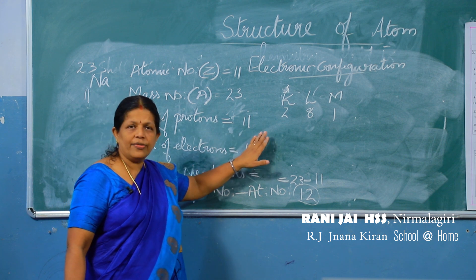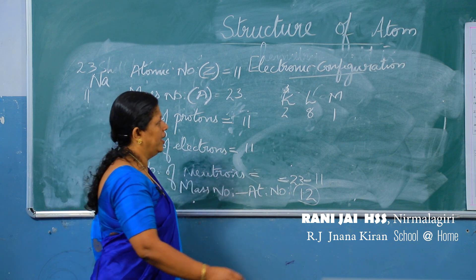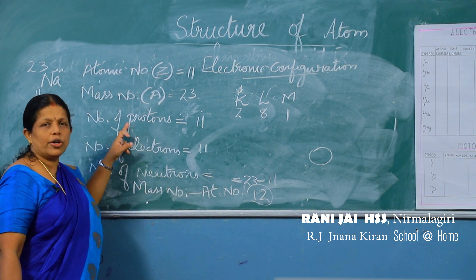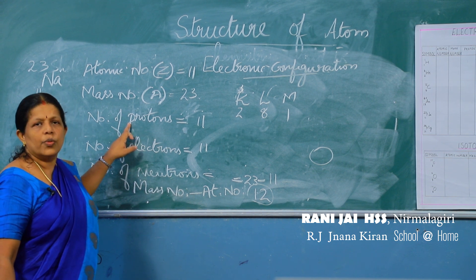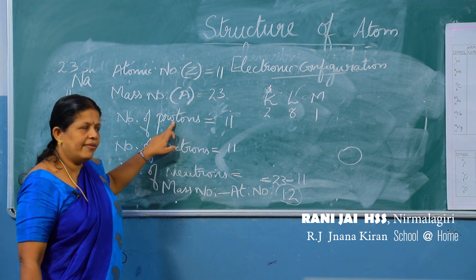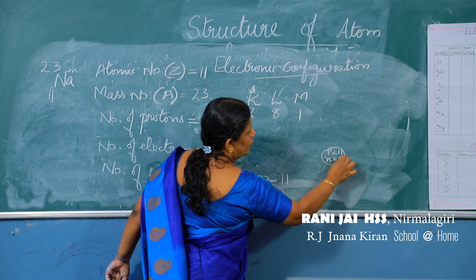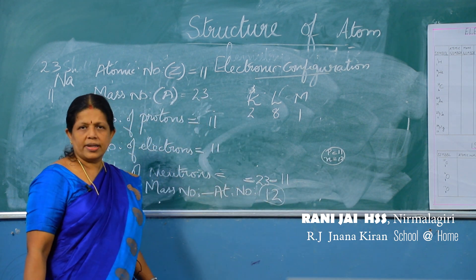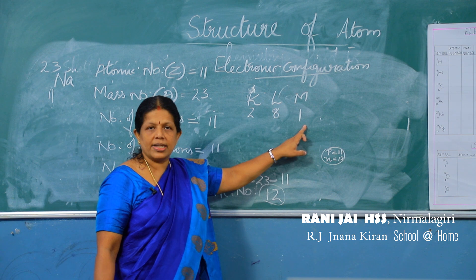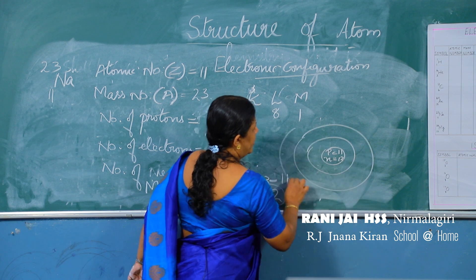Now how do we draw the Bohr model? First, draw the nucleus and write the subatomic particles in it: protons (P = 11) and neutrons (N = 12). Then draw the shells: K shell, then L shell, then M shell using a compass.